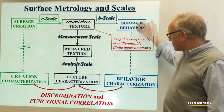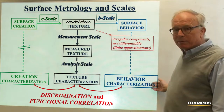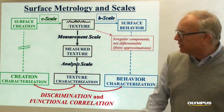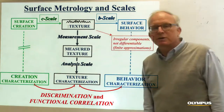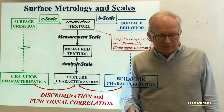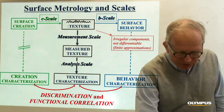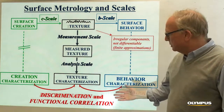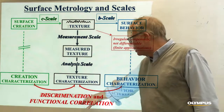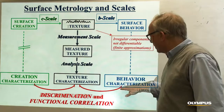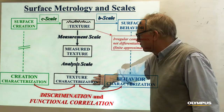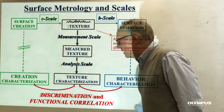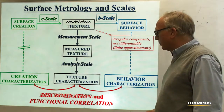We also need to characterize the behavior and performance somehow, and how we made the surface — this might be the feed in manufacturing, or the abrasive we're using in grinding. And then what we'd like to be able to do, for quality assurance or quality control, is discriminate good textures from bad, by the way they were made, or the way they're performing or going to perform.